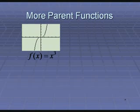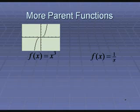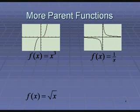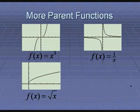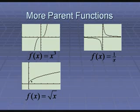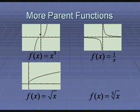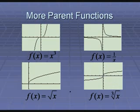X to the third looks like that S-curve. 1 over x is called a hyperbola. Square root of x is a sideways parabola, but only the top half — because the square root is always positive. If you had plus and minus the square root, you'd get the bottom half too. The cube root of x is the inverse of x cubed, and it's that same graph on its side.